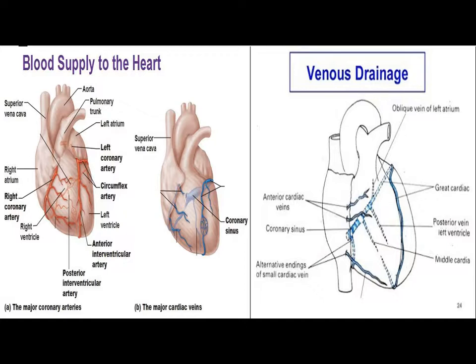The venous drainage of the heart, in approximately 60% of cases, follows the coronary arteries to the coronary sinus located within the posterior atrioventricular groove. Other tributaries that drain the heart include the great cardiac vein, posterior left ventricular vein, middle cardiac vein, and anterior cardiac veins.